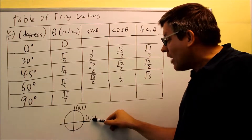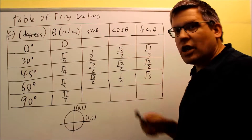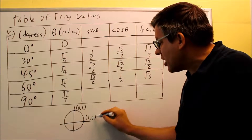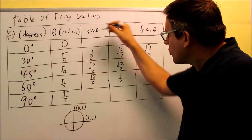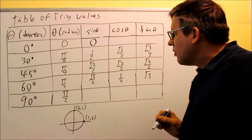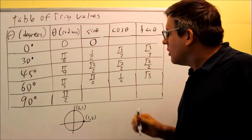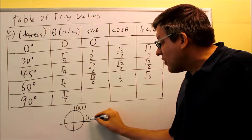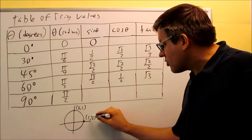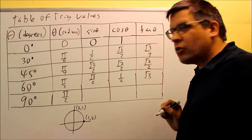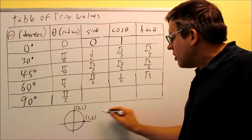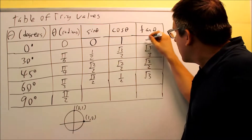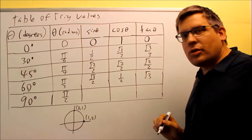The x-value is 1 and the y-value is 0. We can put that information on our table. For sine, the sine would be the y-value at this point, so I'm going to put in 0. Sine of 0 is 0. Cosine of 0 is the x-value, which is 1. Tangent is the y-value over the x-value, which is 0 over 1 — that gives you 0. That completes the top row.